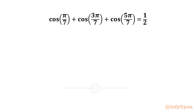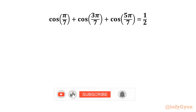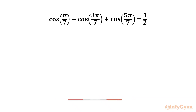Hello friends, welcome back to Infigyan. In this video, we are going to prove that cos(π/7) + cos(3π/7) + cos(5π/7) = 1/2. So let's get started.